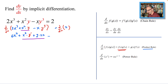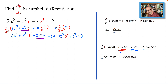Minus the derivative of the product x times y³ will give us the following: we leave the first function x as is, times the derivative of y³, which is 3y² times y prime; plus the second function y³ as is, times the derivative of x, which is 1.